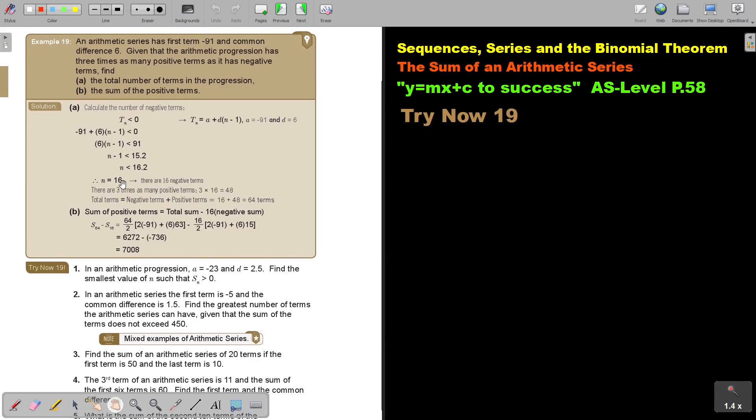Therefore, N is 16. There are 16 negative terms. There are 3 times as many positive terms, so 3 times 16 will be 48. The total number of terms is the negative ones, 16, plus the positive ones, 48, which is 64 terms.